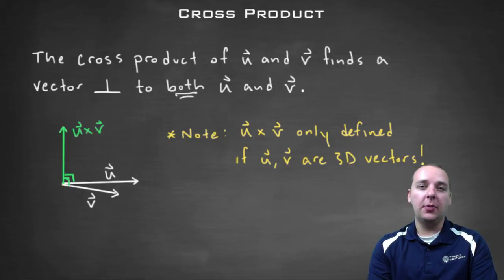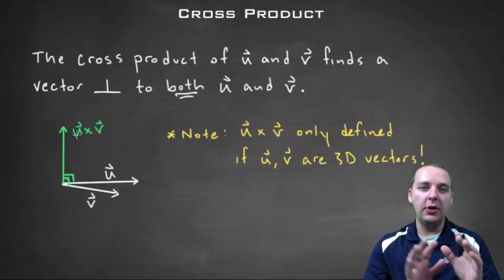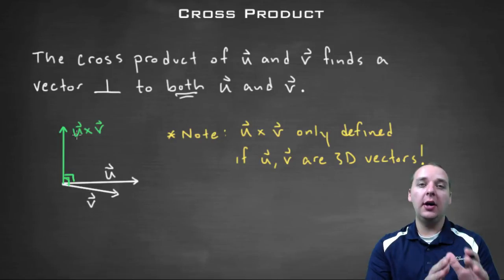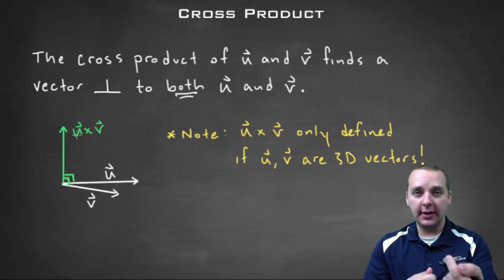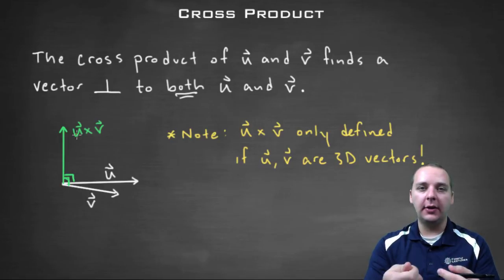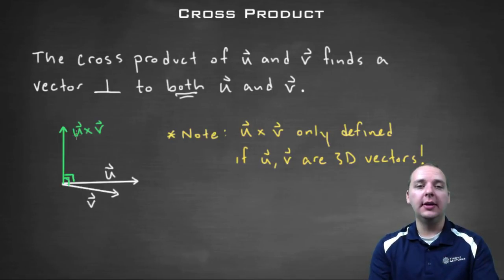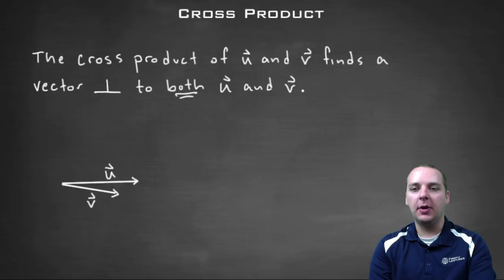Alright, now the next thing I want to talk about is now that we know what a cross product does, how do you find it? Like if I actually handed you a vector u and a vector v, what do you do to get this new guy? So let's talk about that next.